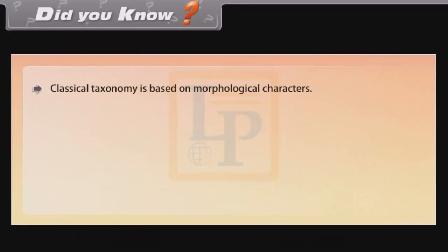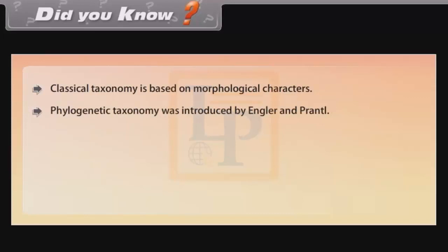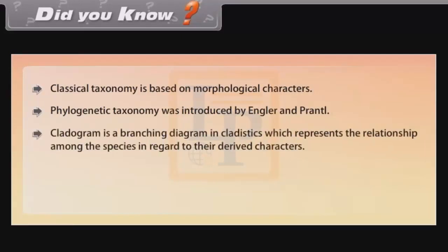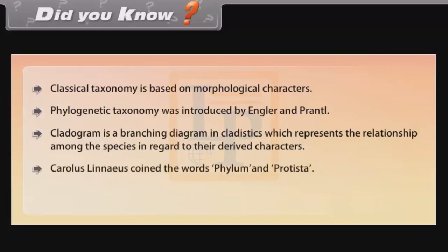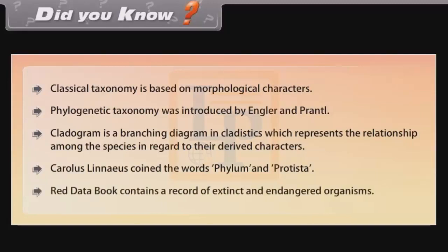Did you know? Classical taxonomy is based on morphological characters. Phylogenetic taxonomy was introduced by Engler and Prantl. A cladogram is a branching diagram in cladistics representing relationships among species in regard to their derived characters. Carolus Linnaeus coined the words phylum and Protista. The Red Data Book contains a record of extinct and endangered organisms.